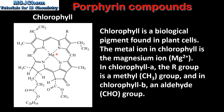Here we have the central metal ion, which we can see is an Mg²⁺ ion. Just like in heme, the nitrogen atoms with their non-bonding pairs of electrons form coordinate covalent bonds with the Mg²⁺ ion. Here we can see the R group, which in chlorophyll A is a methyl group and in chlorophyll B an aldehyde group.